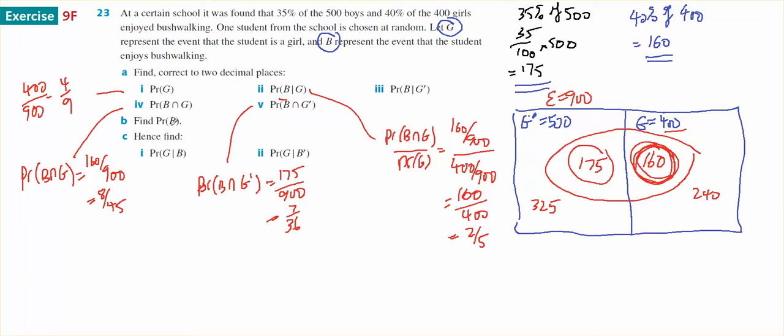Part B. Find the probability of a bushwalker. Well, a bushwalker is this 175 and this 160. So 175 plus 160 all over 900, which should be 67 on 180.